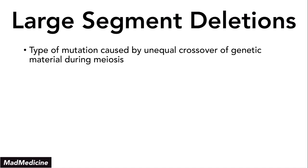How does this happen? Oftentimes, this is a type of mutation that occurs due to unequal crossover of genetic material during meiosis. This is high yield — in order to understand how a large segment of your DNA is deleted, it is occurring during meiosis when you have the crossover of genetic material. If that genetic material does not cross over in a balanced fashion, you will have one cell that has more genetic material than the other, and that will lead to the other cell having a large segment deletion.